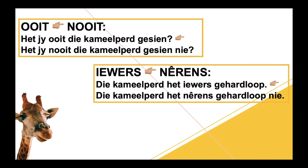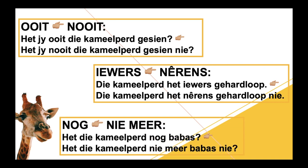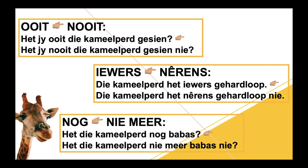'Iëwers' changes to 'nêrens' — 'iëwers' is just like somewhere as well, and that changes to nowhere. So 'die kameelpaard het iëwers gehardloop' changes to 'die kameelpaard het nêrens gehardloop nie.' And 'nog' — when 'nog' is alone in your positive sentence, 'nog' changes to 'nie meer'. Remember, 'nog' on its own is not a negative word. So 'het die kameelpaard nog babaas?' becomes 'het die kameelpaard nie meer babaas nie.'